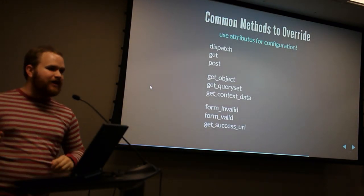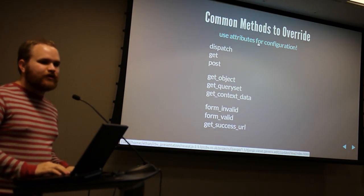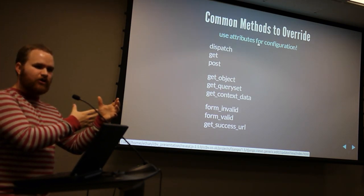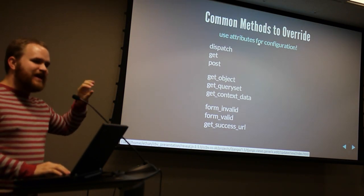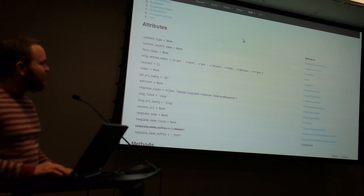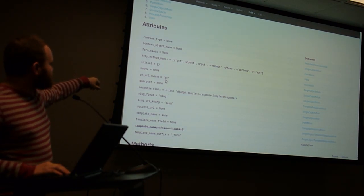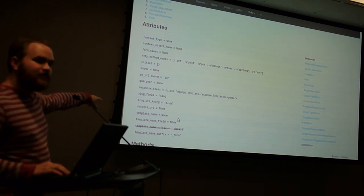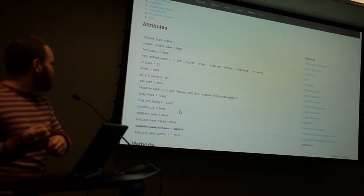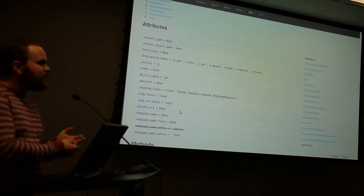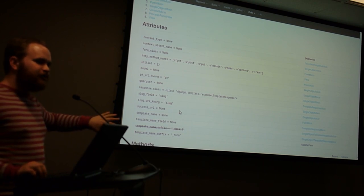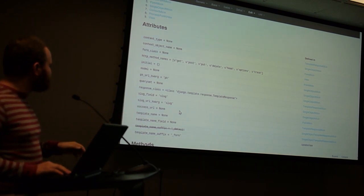These are some common methods to override. Use attributes for configuration — the default behavior you configure with class attributes, just as you used to pass stuff into function calls. So for things like template_name and success_url, that's all controlled on the attributes. You touch the methods if you need to stray further from the default behavior.